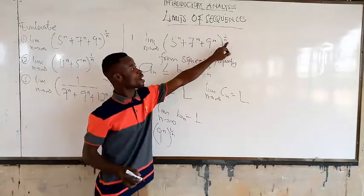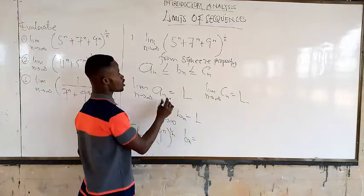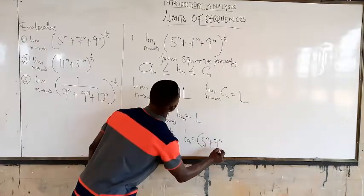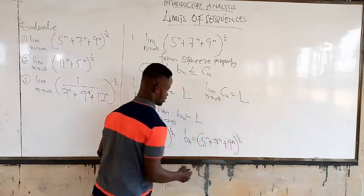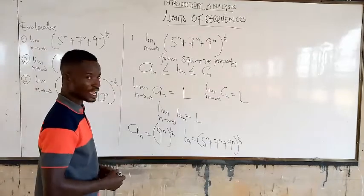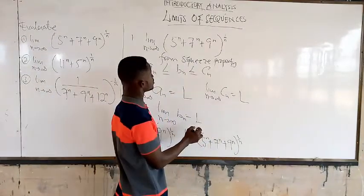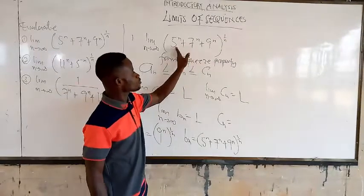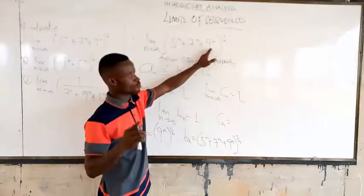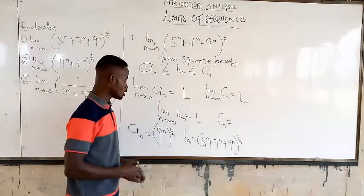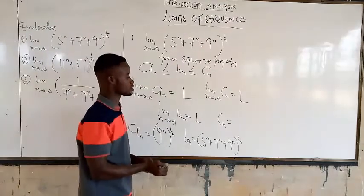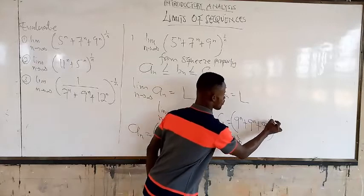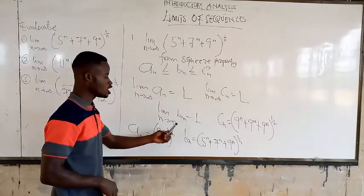Now you define your b_n. Your b_n will be everything there, which is 5 raised to the power of n plus 7 raised to the power of n plus 9 raised to the power of n, all to the power 1 over n. Then that's the way you define c_n. The c_n is also going to be — how many times do we have here? 1, 2, 3. So we have 3 times. We are going to repeat this greatest value 3 times, all to the power of 1 over n.